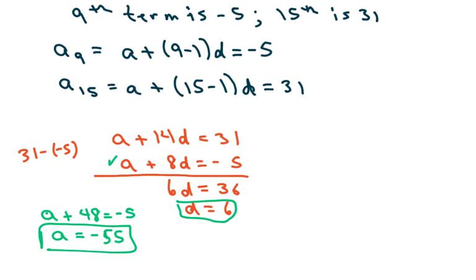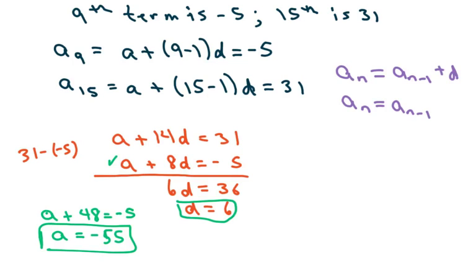So I found my a and my d. The next thing I have to do is write my recursive formula, and we're going to use the standard form. My current term is my previous term plus your common difference. So my current term is my previous term, and my common difference was 6, so plus 6.